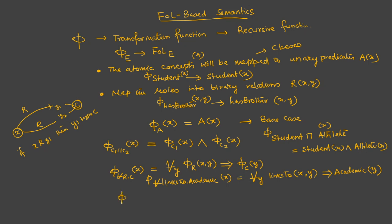For the limited existential restriction ∃R.⊤: phi(∃R.⊤, x) = ∃y: links_to(x, y). These are the ways we translate description logic statements into their corresponding first-order logic statements using the recursive transformation function phi.